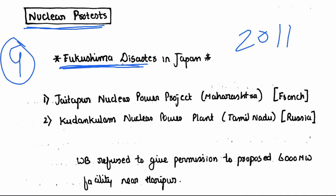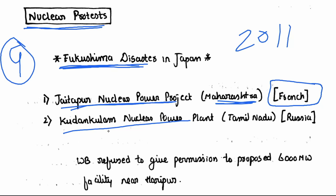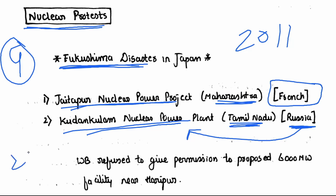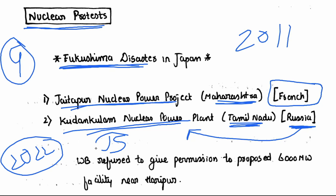After this disaster, there were large-scale protests in Maharashtra's Jayatpur nuclear power plant, which is supported by France, and Kudankulam nuclear power plant in Tamil Nadu, supported by Russia. Germany shut down 8 out of its 17 reactors and announced it would stop using nuclear plants for power generation by 2022. Switzerland and Spain also planned to halt construction of new reactors.